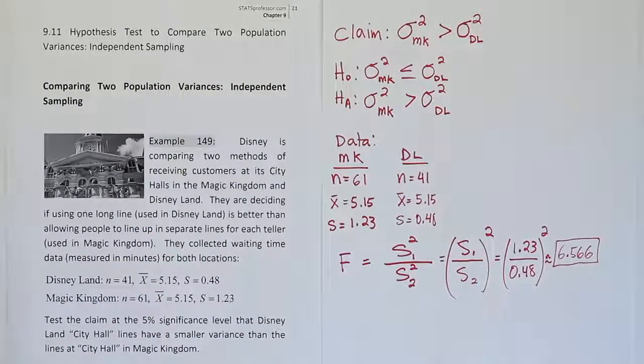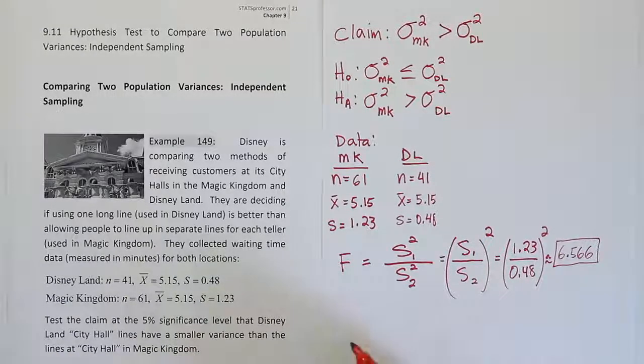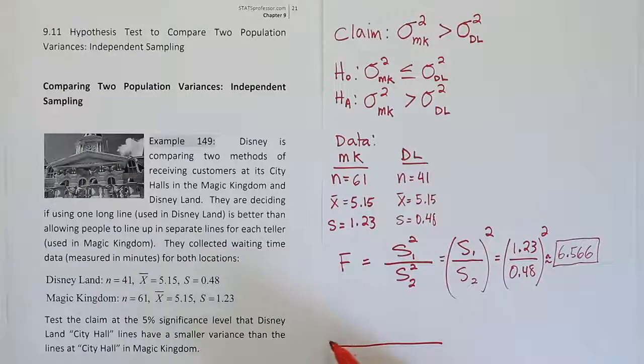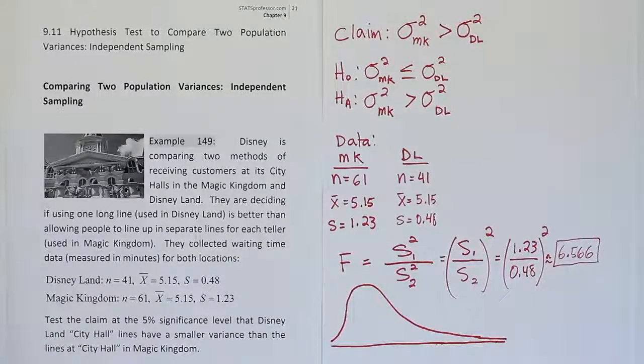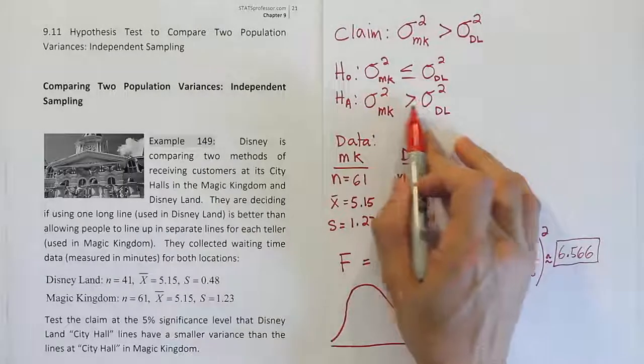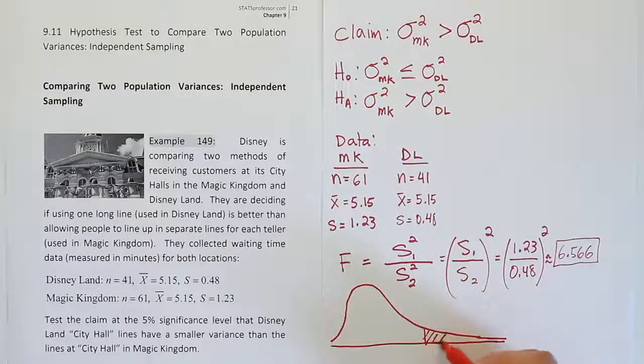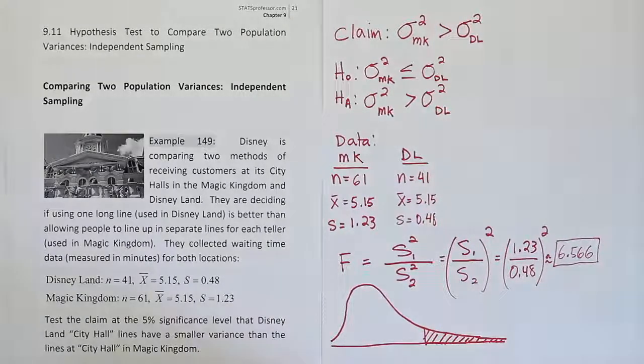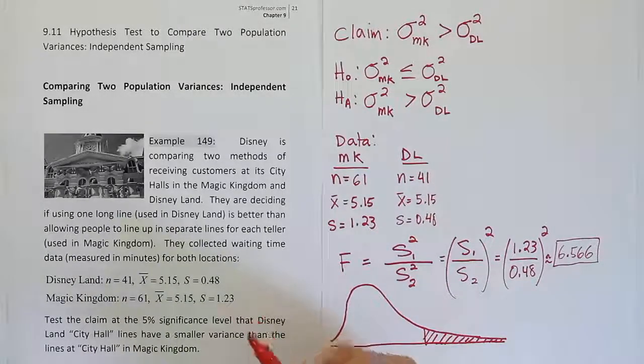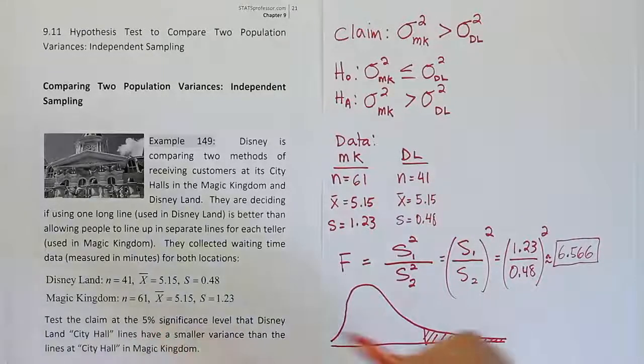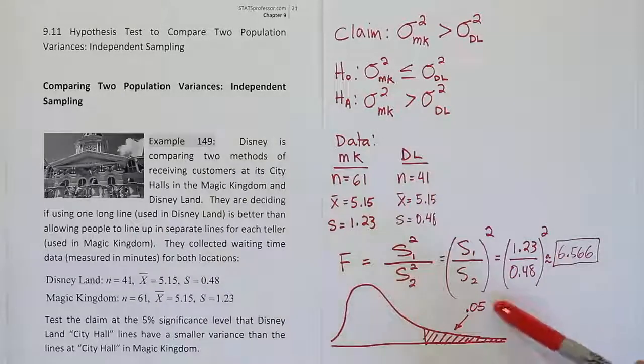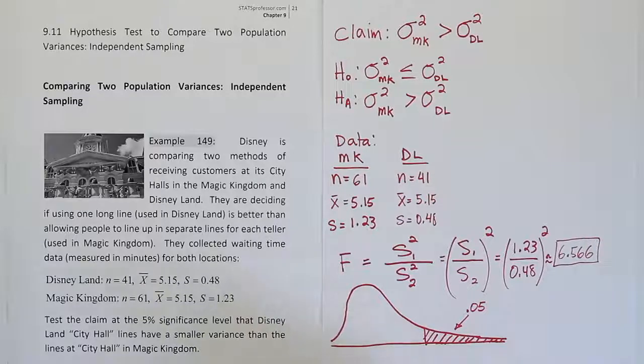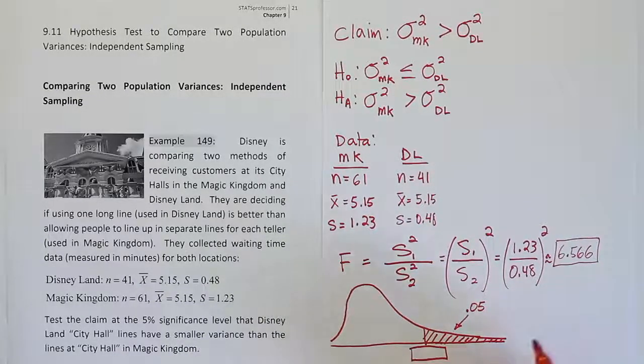Just like before, we're going to use a critical value approach to finish the problem. So we want to draw a curve and label a critical value on it and a rejection region. What does the F curve look like? Well, it's kind of like a skewed bell curve. It usually has a long skinny tail on one side. The rejection region for our procedure is going to be a right tail test. So we're going to shade the tail area. The alpha in that tail is the alpha they provided in the problem. They say we're using a 5% significance level. It's all in one tail because it's a one tail procedure.